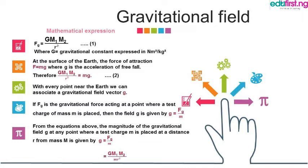The magnitude of the gravitational field g at any point where a test mass M is placed at a distance R from a mass is given as g equals F over M. Since F equals GM1M2 over R squared, we substitute that into this equation to give us g equals GM1M2 divided by MR squared.